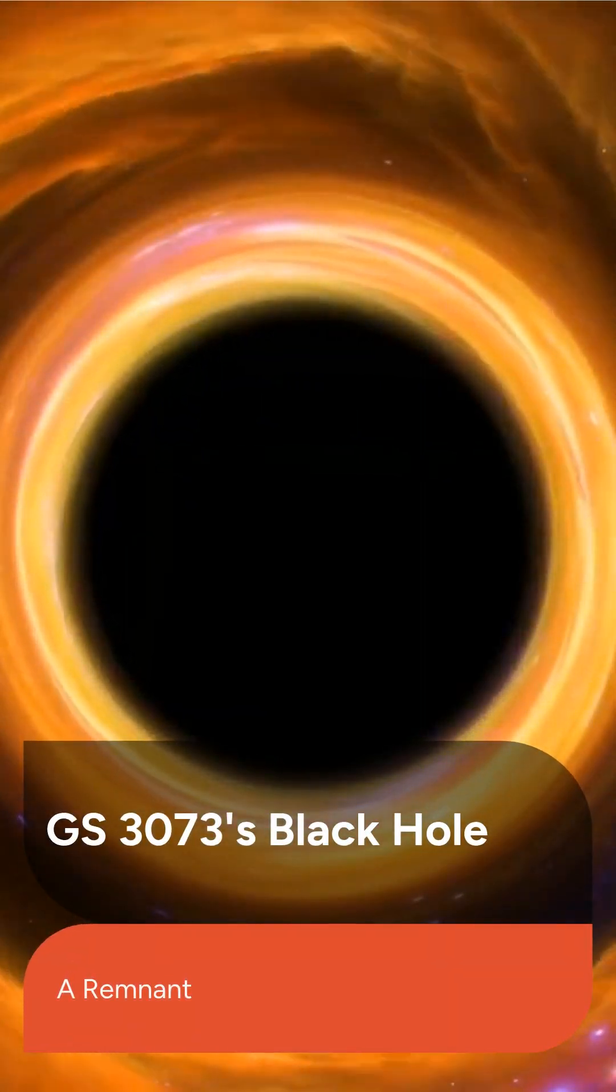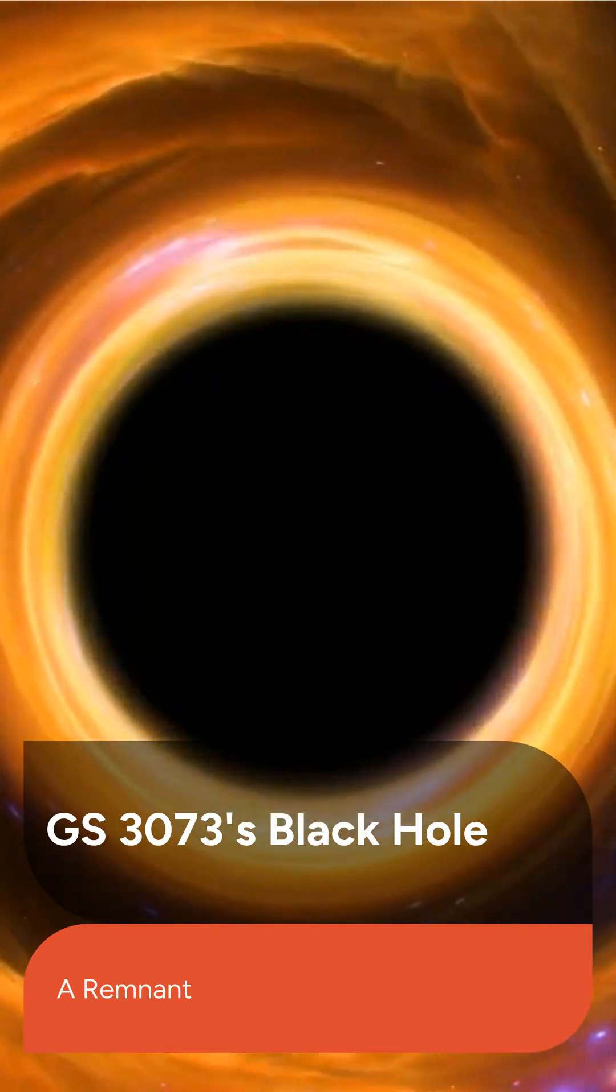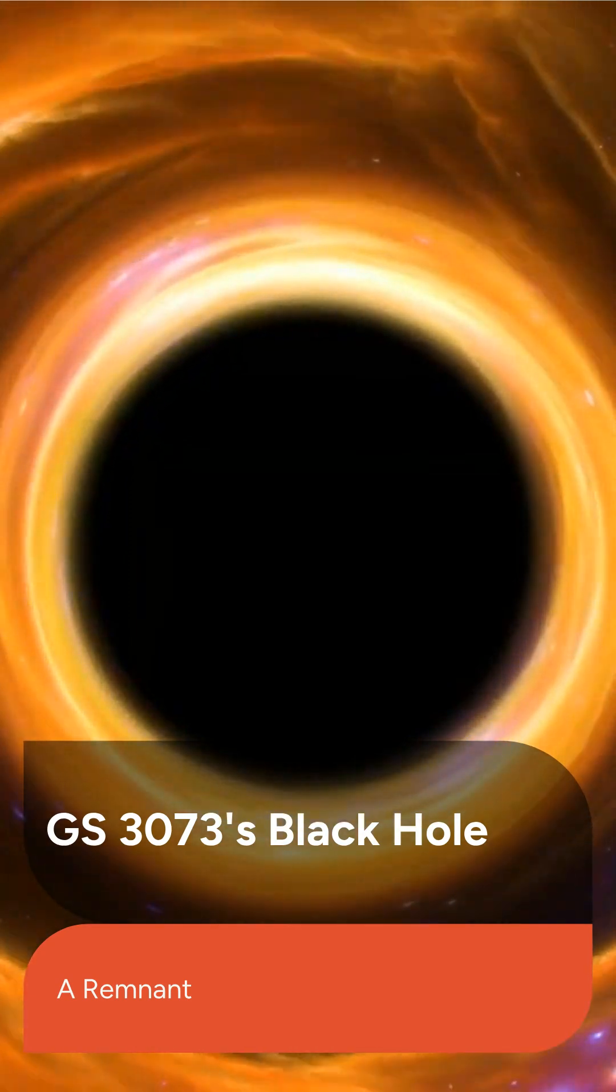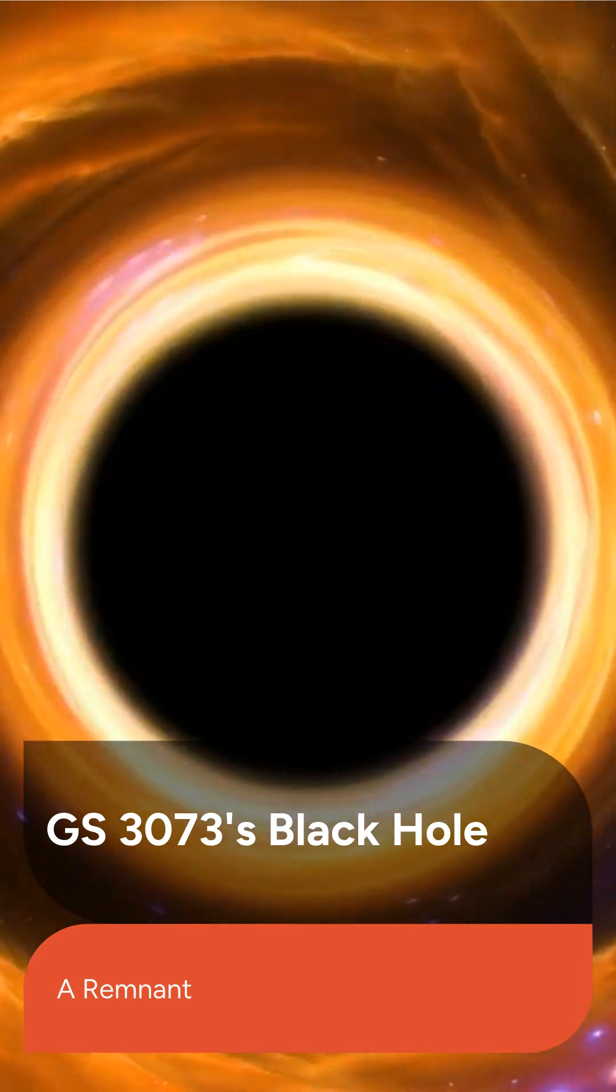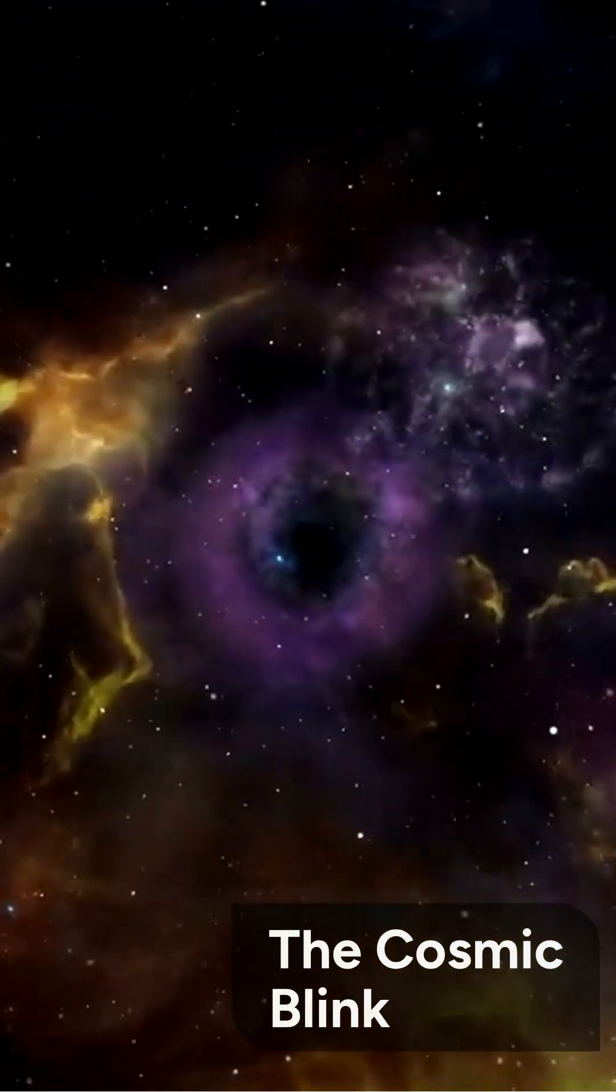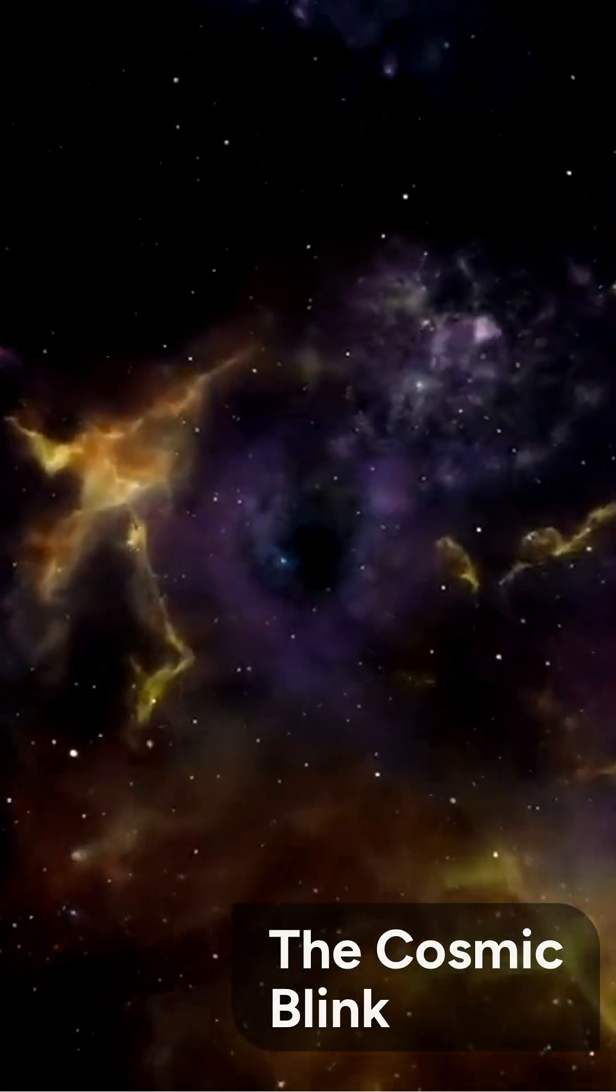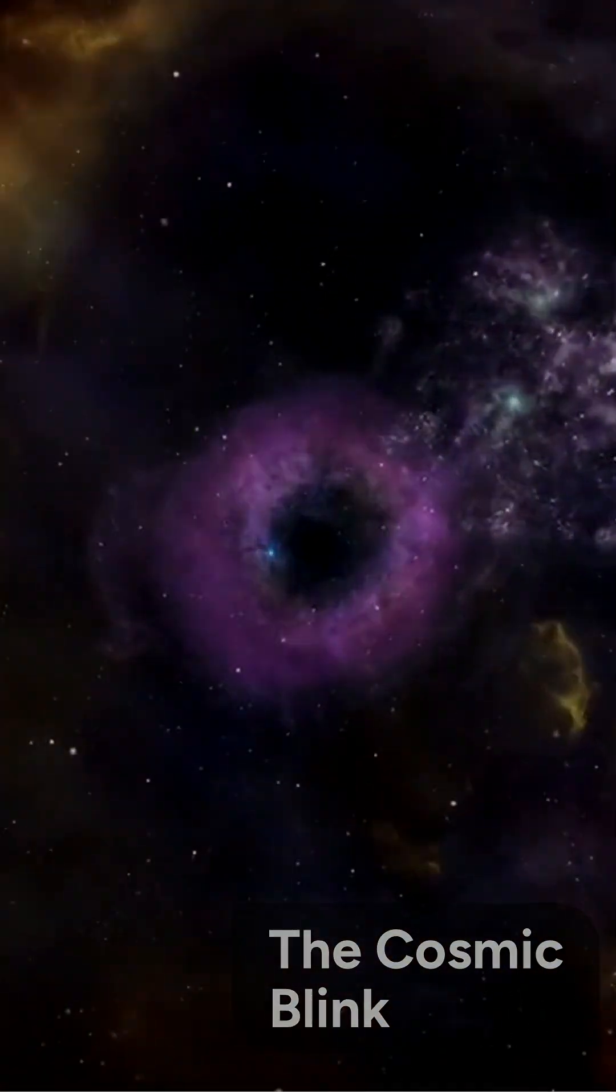Intriguingly, Galaxy GS3073 has an actively feeding black hole at its center, potentially the remnant of one of these supermassive first stars, solving two cosmic mysteries at once. These short-lived monster stars were a cosmic blink of an eye, but their existence helped shape the early universe and the supermassive black holes we observe today.